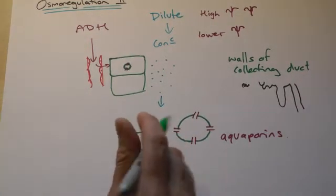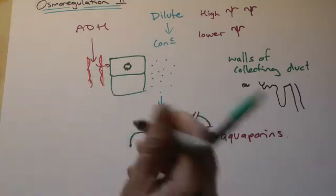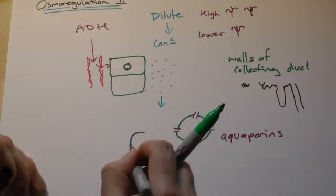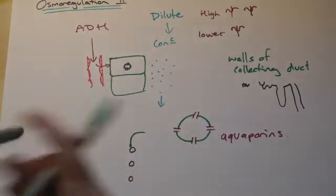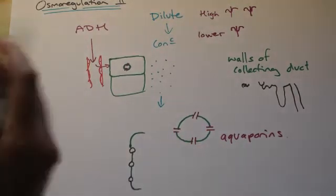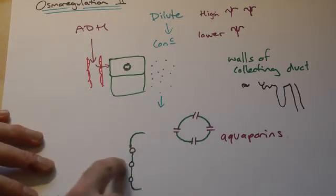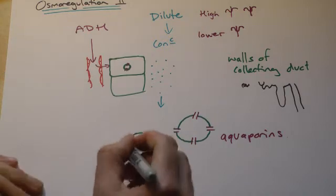If we were to look at it, what you actually have is receptors in the membrane. Remember that hormones, these kind of hormones, peptide hormones, don't go into the cell. They have a receptor site.